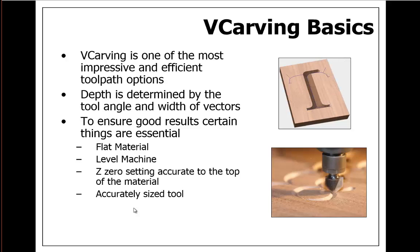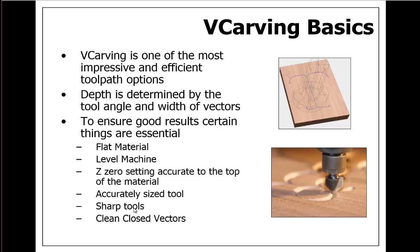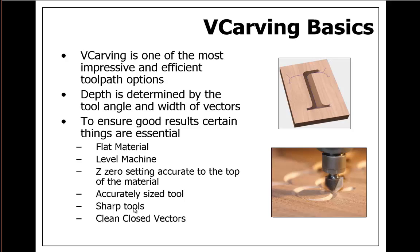We also need to have accurately sized tools. Even if our tool states it is a 90 degree tool it is best that we measure that, as even 1 degree out will alter the look of the part when previewing or running it on the machine. Another aspect to tooling is to ensure that our tools have a sharp point and not a small flat, as this will also take away from the overall effect. Ensure there are no dings or dents on the tool too. Lastly, we need to make sure that we are using clean, closed vectors to V carve. This will ensure we have nice and smooth V carving. We need to ensure these vectors are not overlapping as it will make it unclear to the software which areas we want to V carve. If you do have a design which requires overlapping, you can create separate V carve tool passes which are run in the order that you require to achieve the effect that you are after.